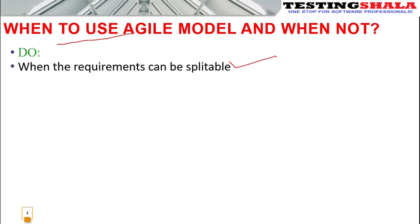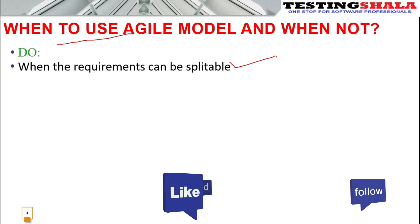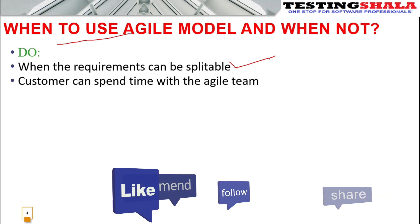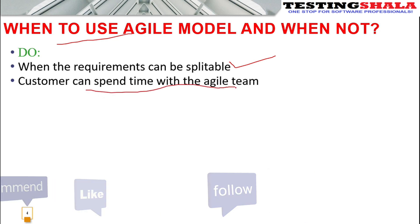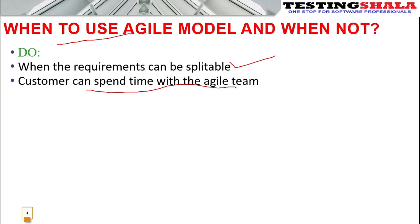There are situations where requirements cannot be further broken down or split into smaller requirements — in those cases we do not use agile. The second situation where agile is suitable is where the customer can spend time with the agile team. This is very crucial because agile requires a lot of interaction with the customer and early feedback. If the customer is not ready to engage adequately, agile is not recommended.